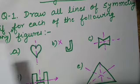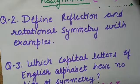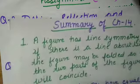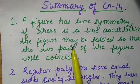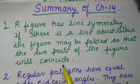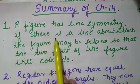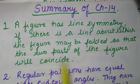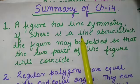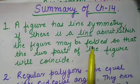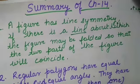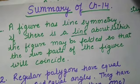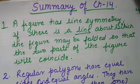Now come to question number 2: define reflection and rotational symmetry with examples. Let us discuss first about reflection symmetry. A figure has line symmetry if there is a line about which the figure may be folded so that the two parts of the figure will coincide. This line also acts as a mirror line, which is why this type of symmetry is also known as reflection symmetry. Examples include equilateral triangle and square.